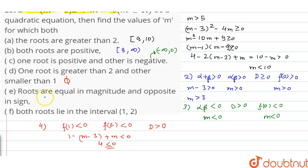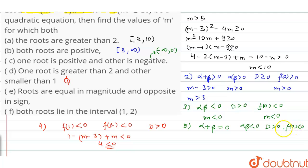The next part says the roots are equal in magnitude but opposite in sign. We can say alpha plus beta equals 0, alpha beta is less than 0, D is greater than 0, and f(0) is less than 0 since 0 lies between the roots. Alpha plus beta equal to 0 gives m minus 3 equal to 0, so m equals 3. But alpha beta less than 0 gives m less than 0. Taking the intersection, we are left with nothing, so this also becomes phi.